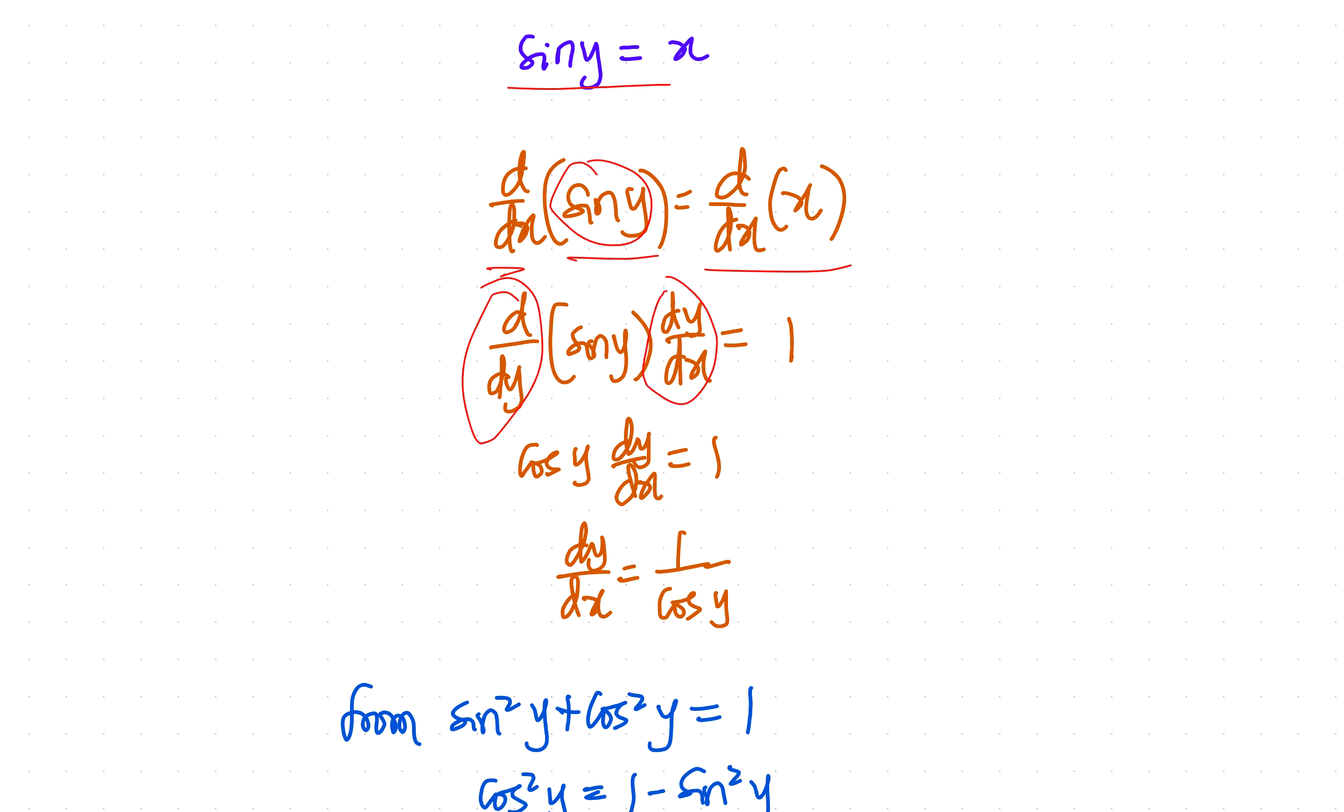So you have d dy now of sine y, which is more reasonable. But then to balance that out, you multiply by dy dx. So that, of course, dy and dy can cancel, and you still have your d dx that we started with. So that's the way to go.